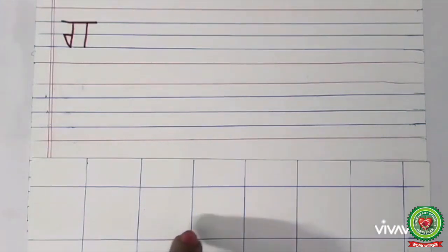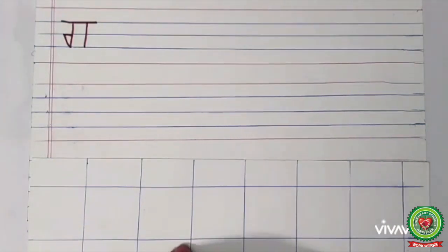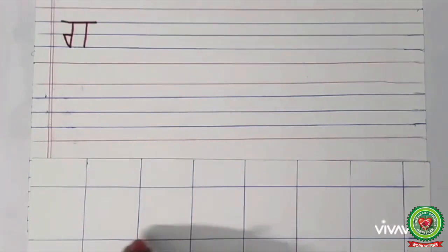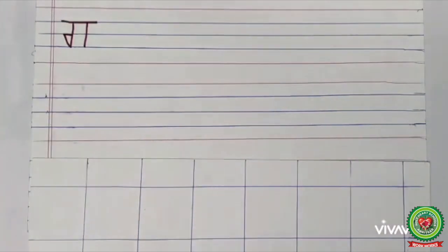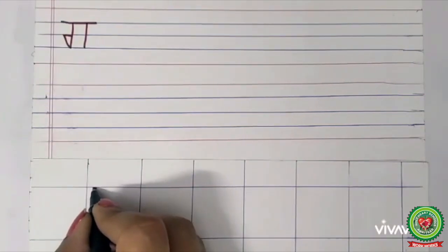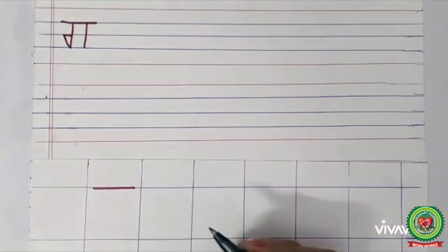As you all know, for practicing Gagga on copy, you must have to take square line copy. So today I will teach you how to write Gagga in square box. For that, our first step is to draw a sleeping line like this.